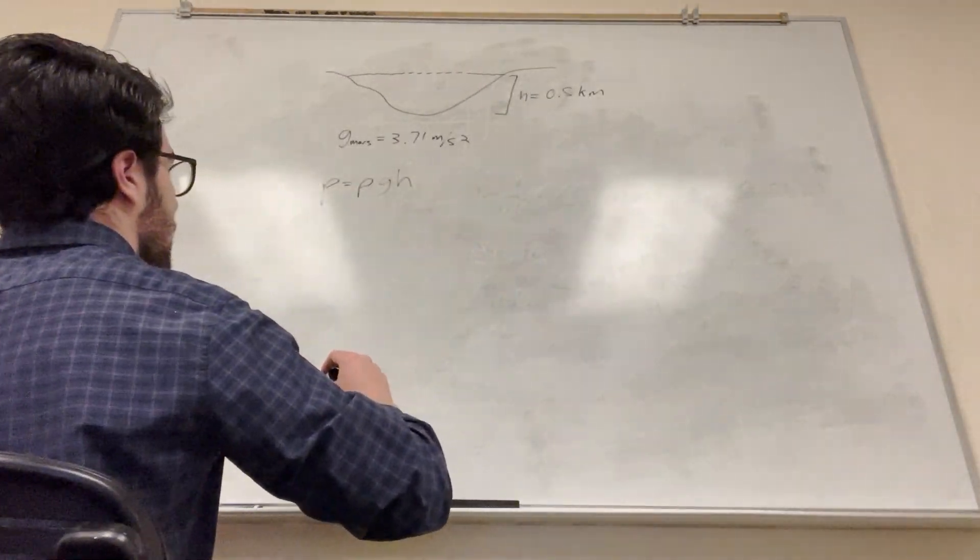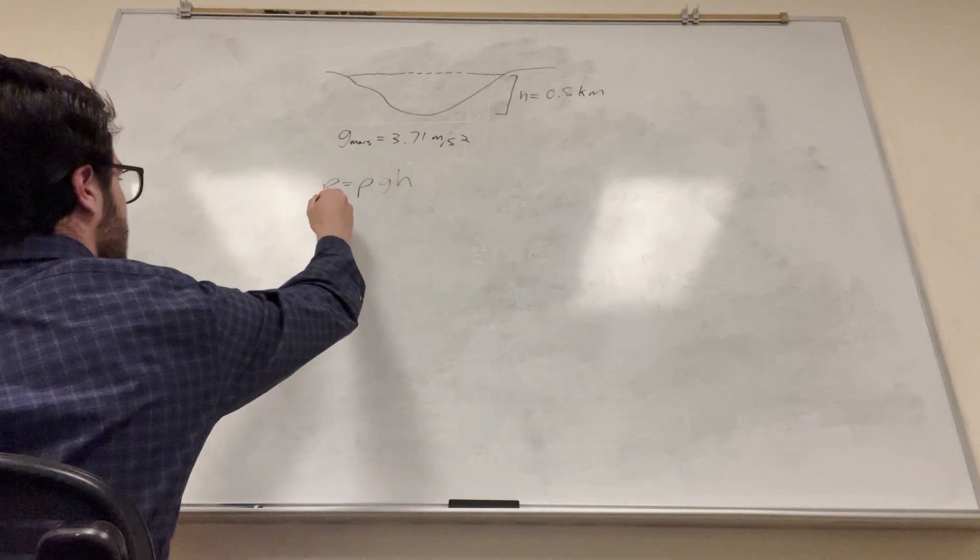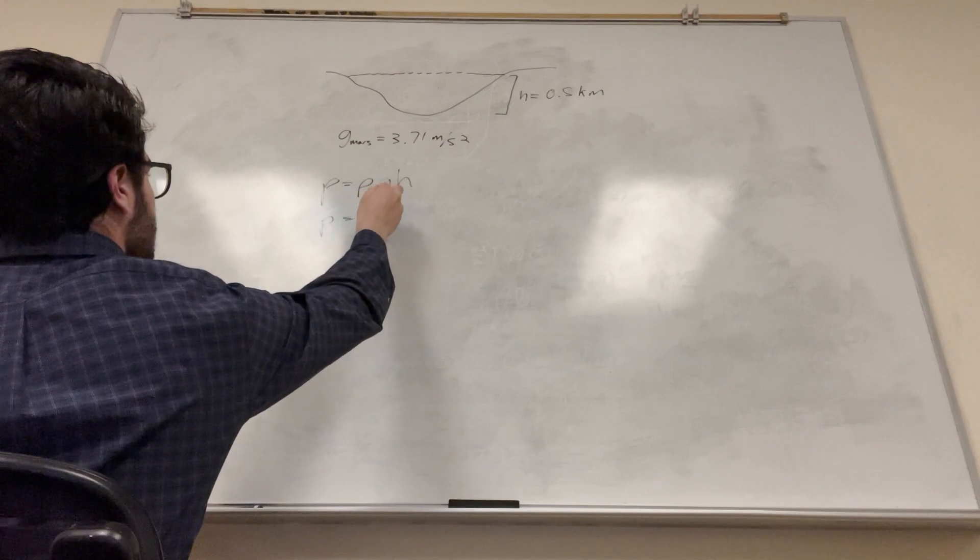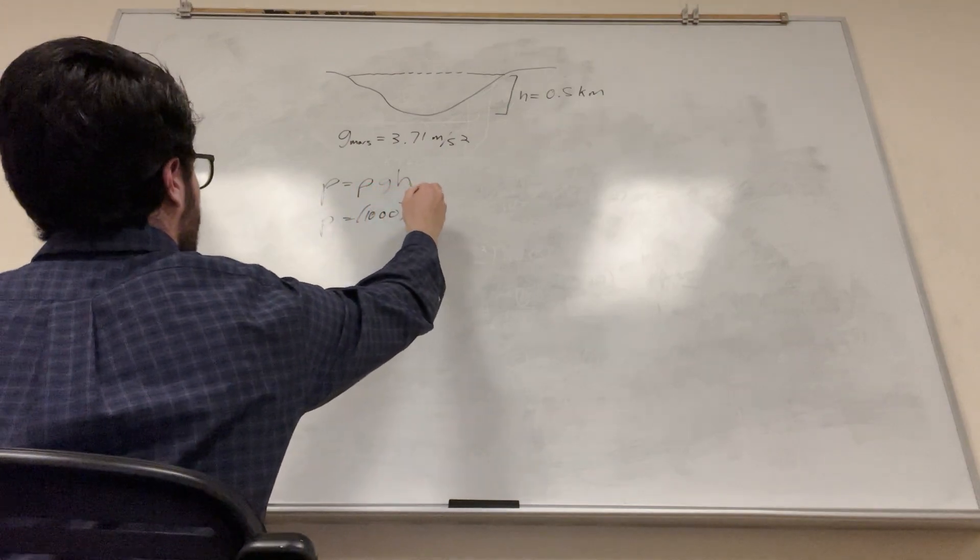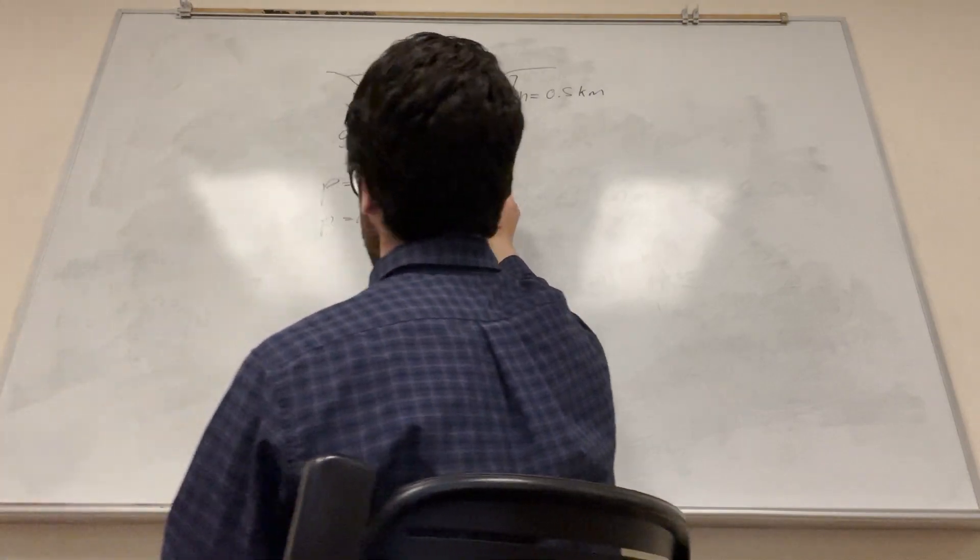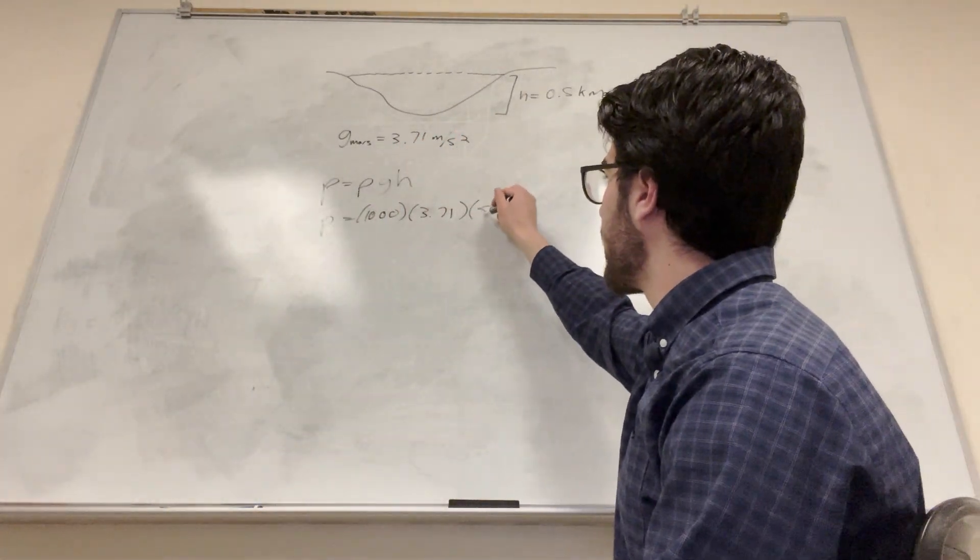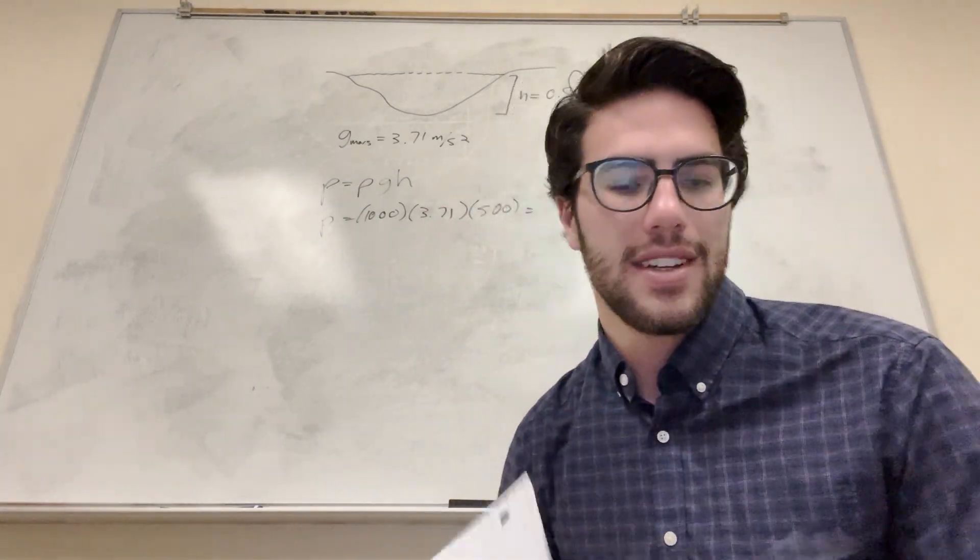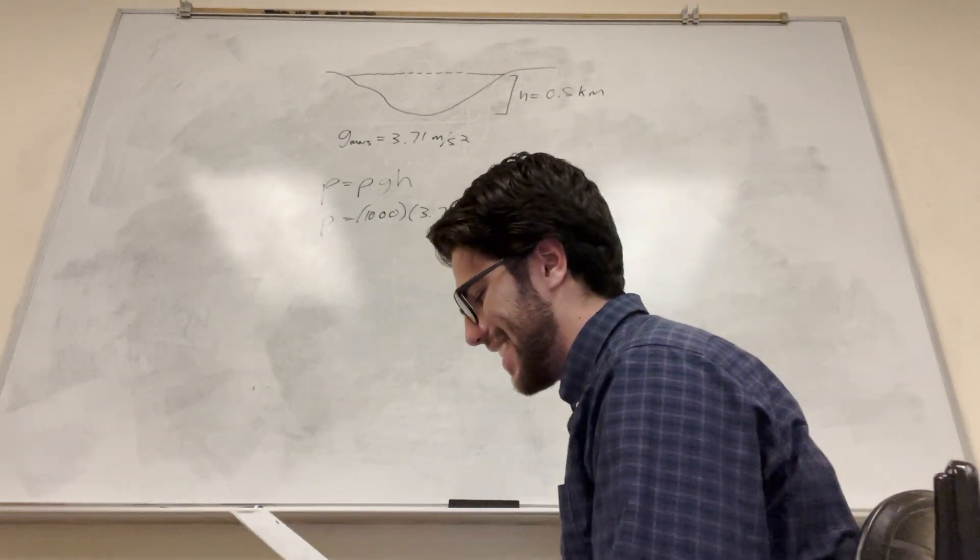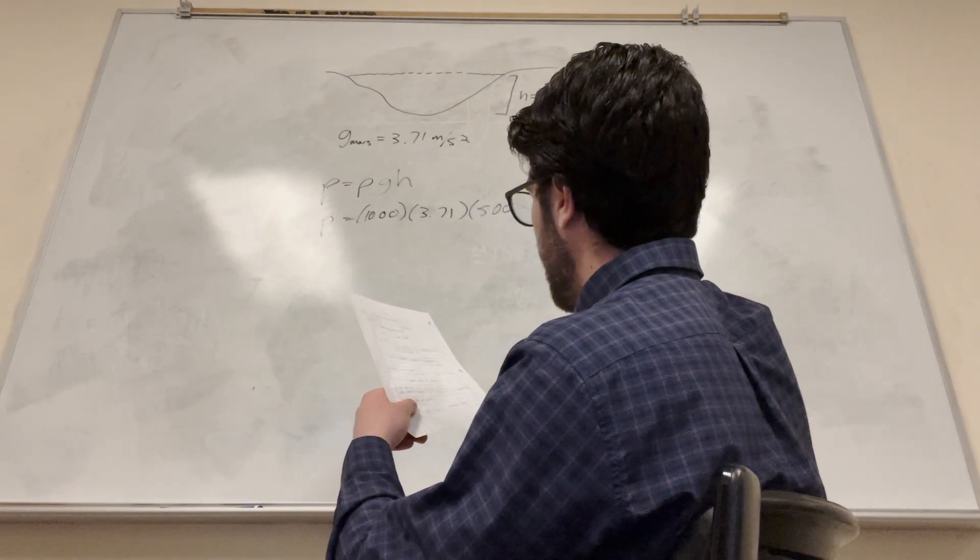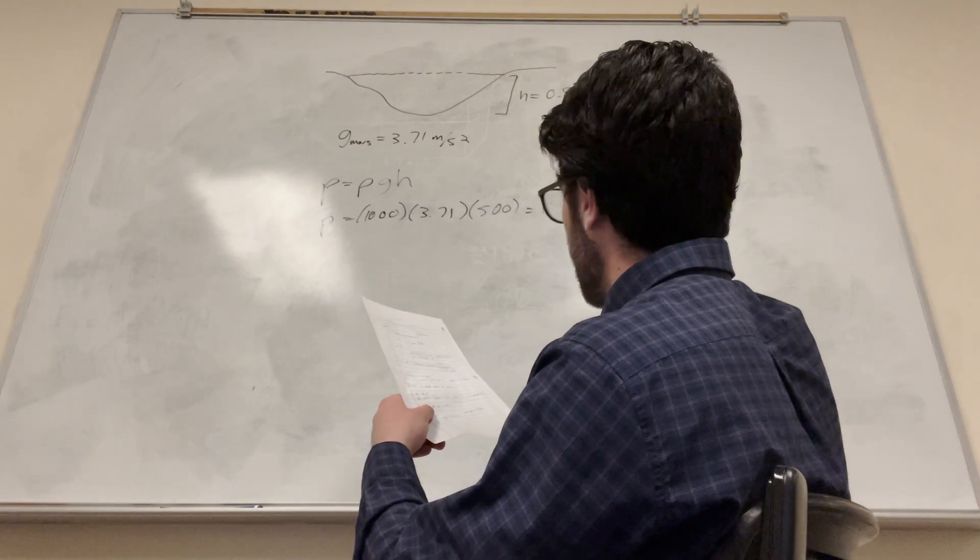So we can pretty much have all this stuff, right? So pressure is equal to... So the density of water is 1,000. Very convenient. Gravity on Mars, 3.71. Height is 0.5 kilometers, which is 500 meters. We need it in meters. Calculate that. You're going to get 1.86 times 10 to the 6 pascals.